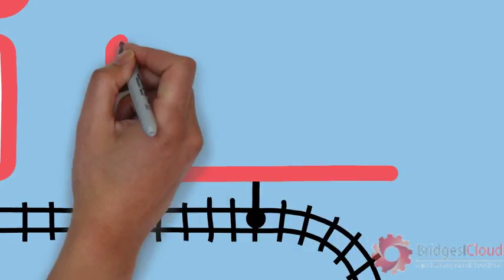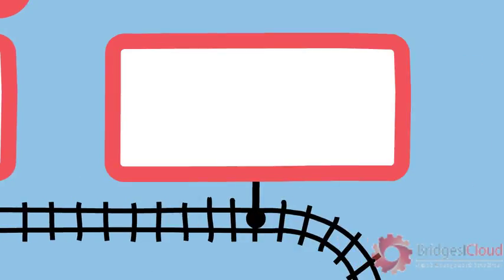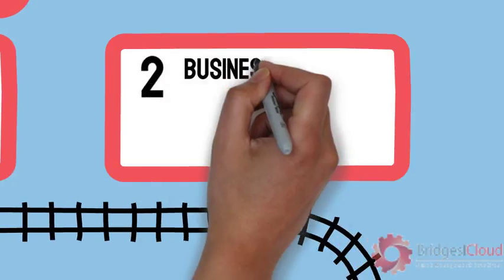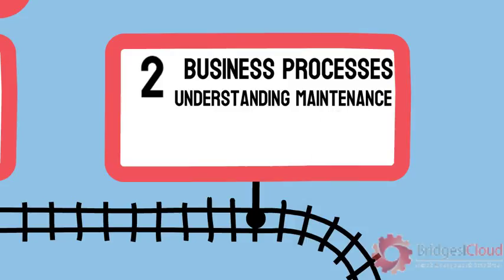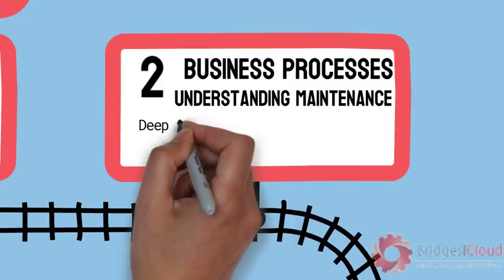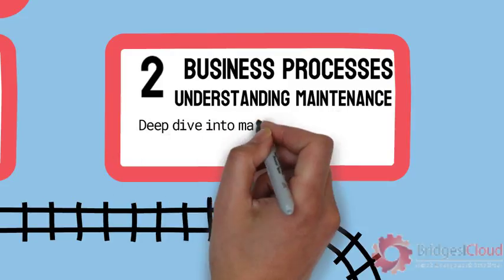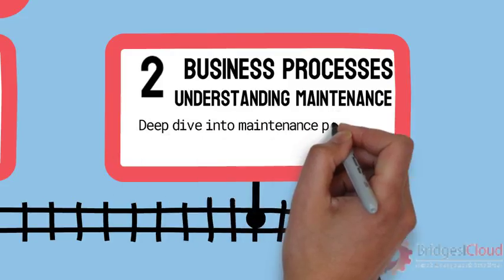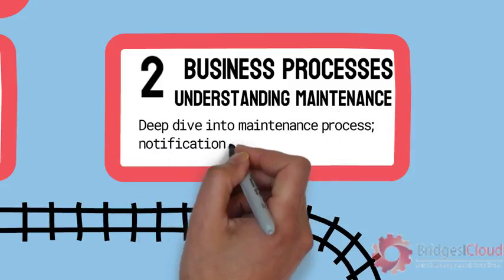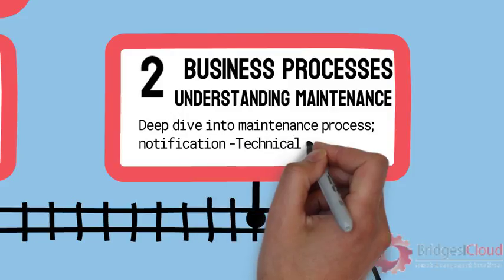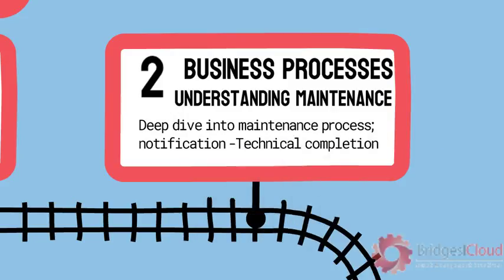The second module covers maintenance business processes. We take a deep dive into maintenance processes from notification creation, planning, scheduling, execution, to technical completion.